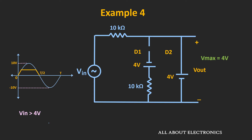And whenever the input is less than 4V, both diodes will act as an open circuit, and during that time the output will follow the input voltage. So during the positive half cycle, the maximum value which will appear across the two terminals will be equal to 4V.